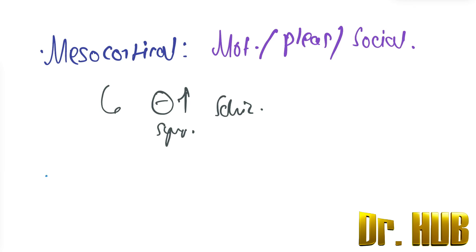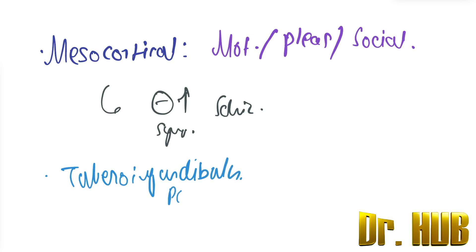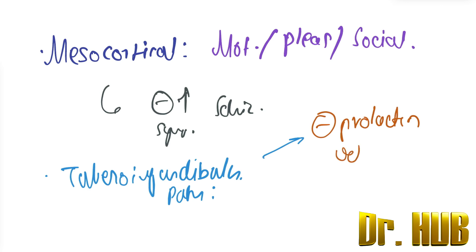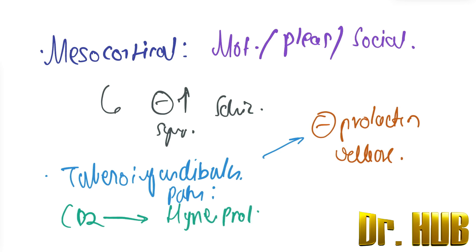Next is the tuberoinfundibular pathway. In this pathway, dopamine inhibits prolactin release. The action of the drug blocking the D2 receptors here results in hyperprolactinemia.